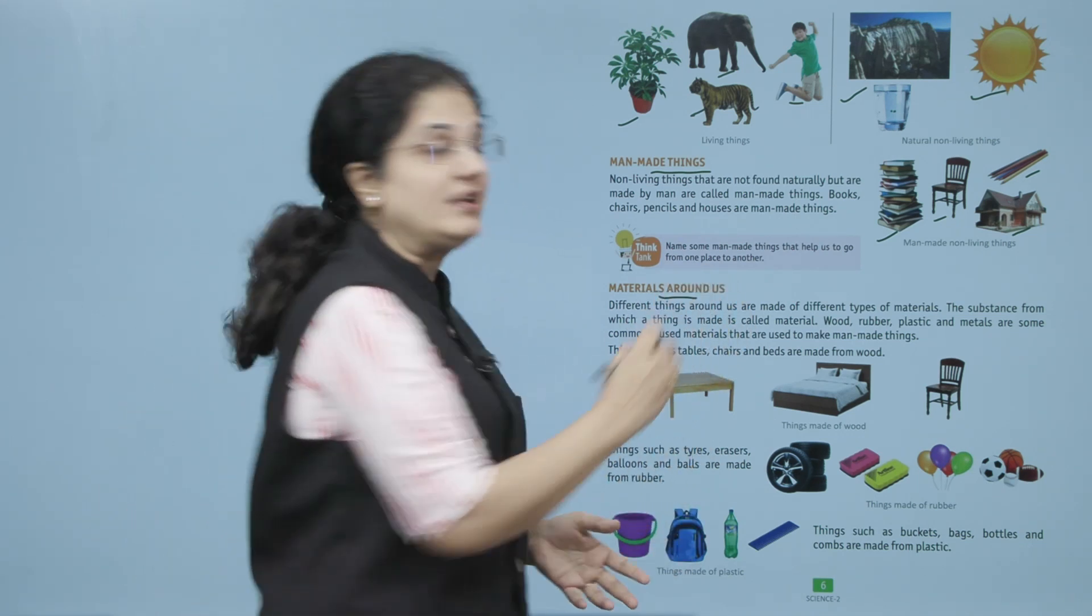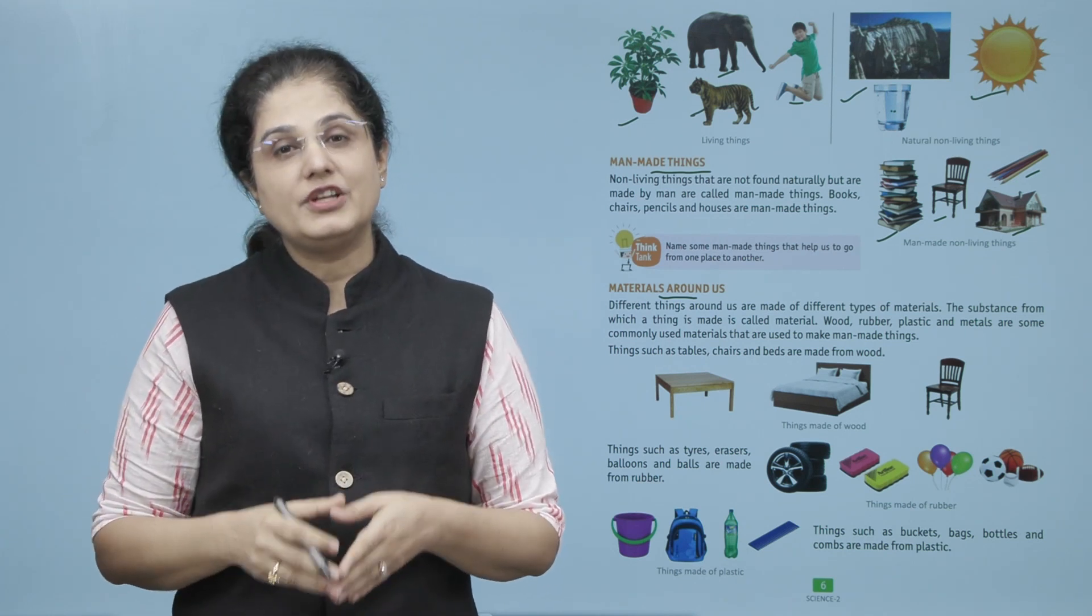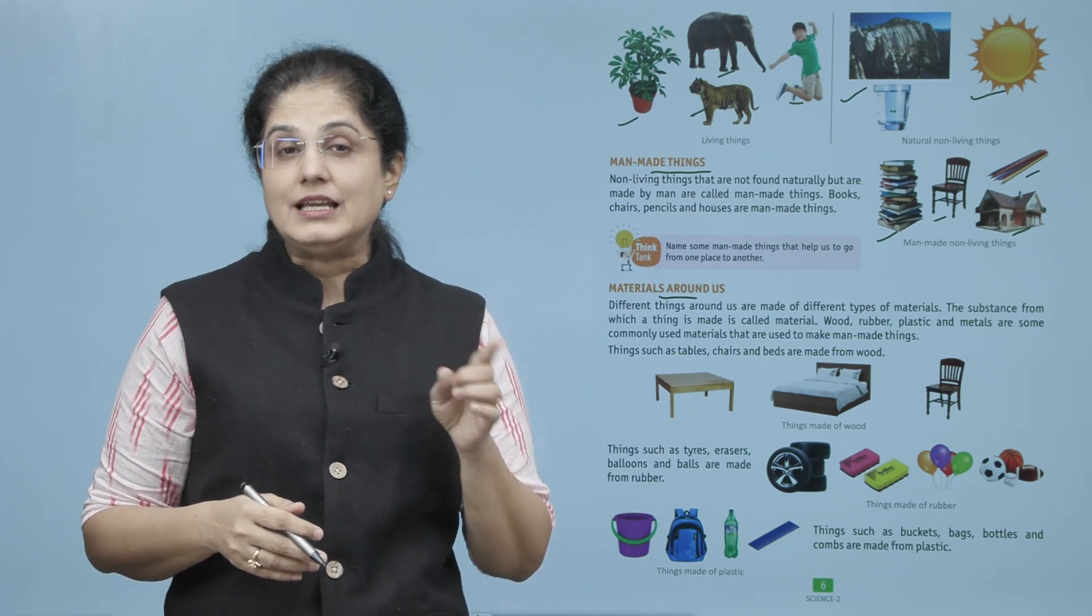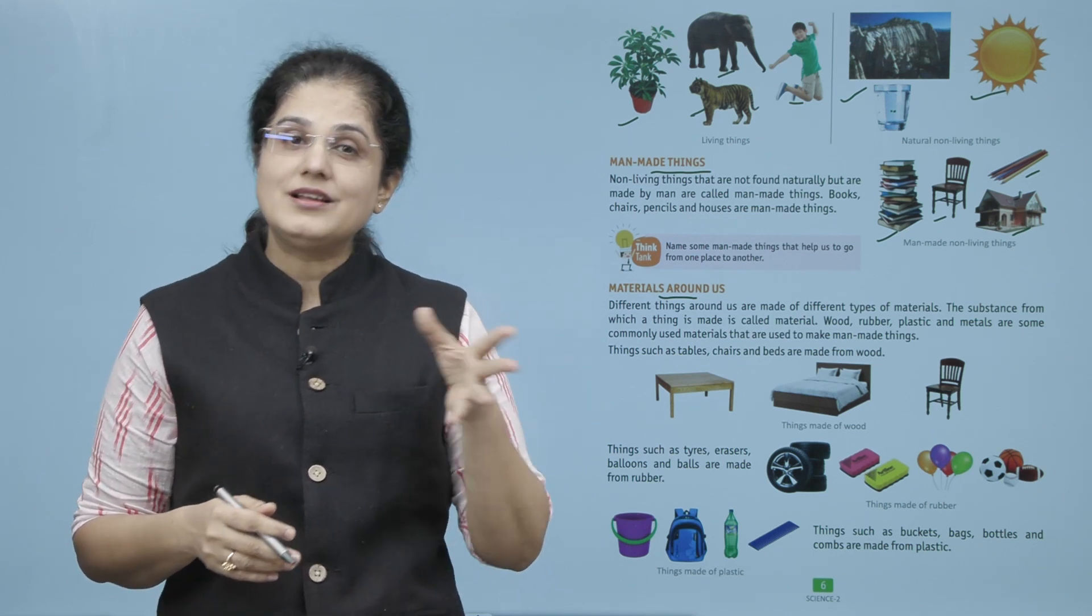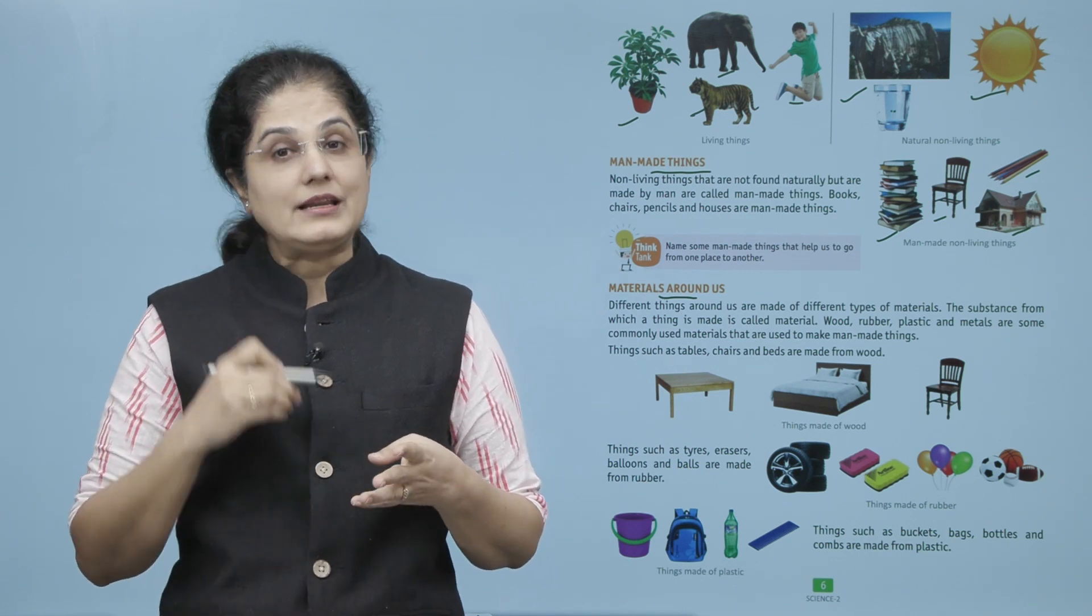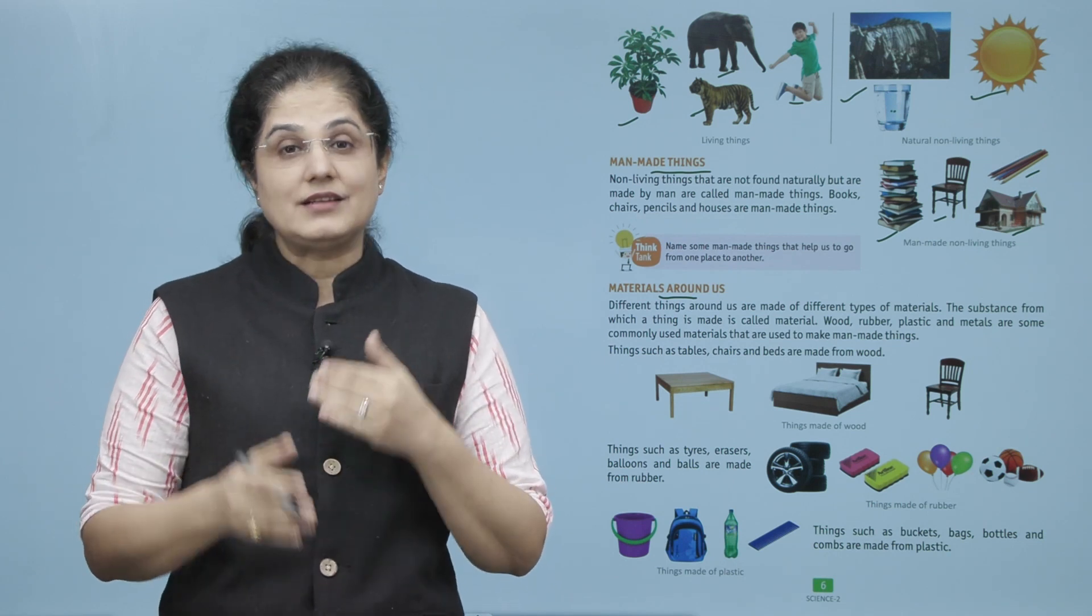Now let us look at the materials around us. Different things around us are made of different types of materials. The substance from which a thing is made is called material.